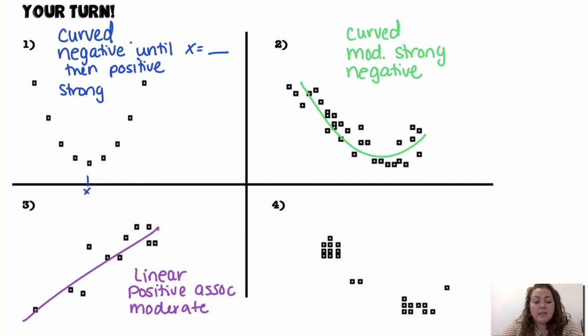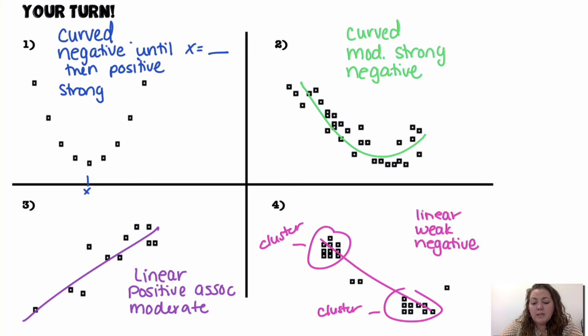This one is linear. It has a positive association and, I would say, a moderate strength. This next one is, like, you have two clusters with a couple dots in between. So, I would say, like, maybe linear. Again, the shape is not super great. Weak and negative.